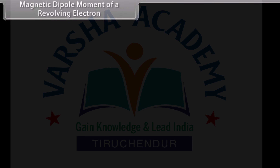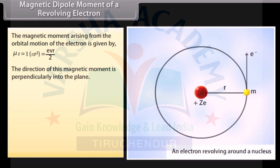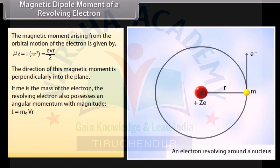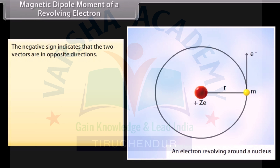The magnetic moment arising from the orbital motion of the electron is given by eVR/2. The direction of this magnetic moment is perpendicularly into the plane. If M_e is the mass of the electron, the revolving electron also possesses an angular momentum with magnitude L = M_e V R. From these two equations, we get mu_L = −(e / 2M_e) × L. The negative sign indicates that the two vectors are in opposite directions.